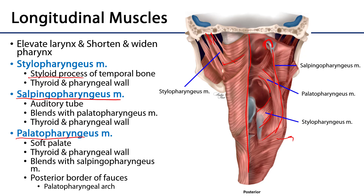The palatopharyngeus muscle originates on the soft palate, specifically the palatine aponeurosis. It comes down and blends with the salpingopharyngeus, and the two together as one larger muscle insert on the thyroid cartilage and the wall of the pharynx. As these longitudinal muscles contract they elevate the larynx during deglutition, and as they elevate the larynx they also tug upward on the wall of the pharynx, which widens the walls and shortens the total depth of the pharynx.